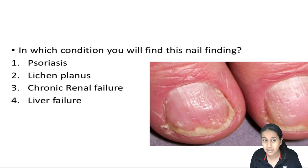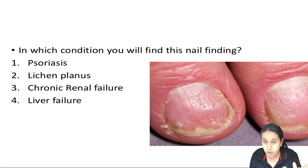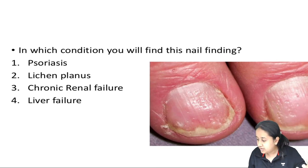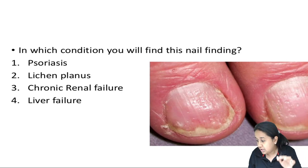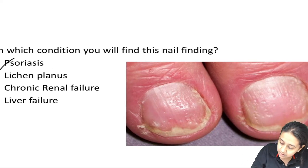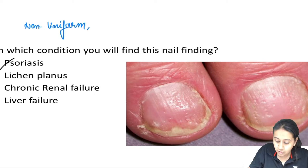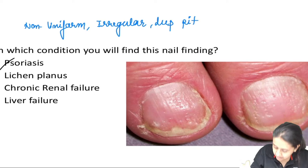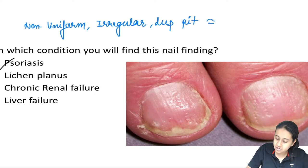Next question: in which of the following conditions will you see this nail finding? Options: psoriasis, lichen planus, chronic renal failure, or liver failure. First, tell me what is this nail change - this is a very characteristic irregular or non-uniform pit, known as a thimble pit. This is a non-uniform, irregular, deep pit which is a very classical feature of psoriasis.